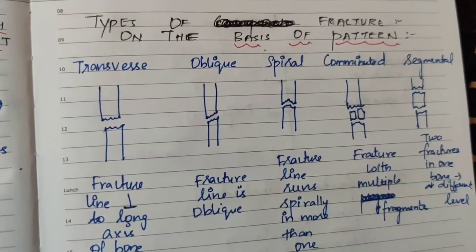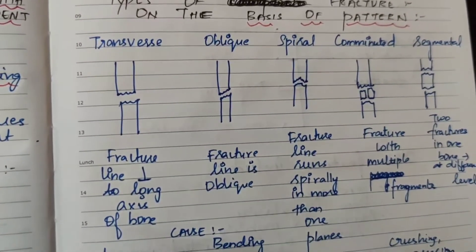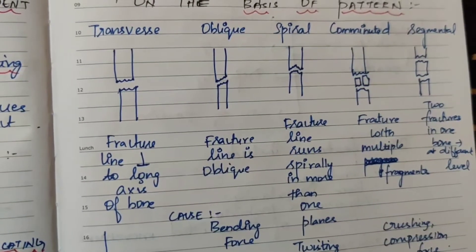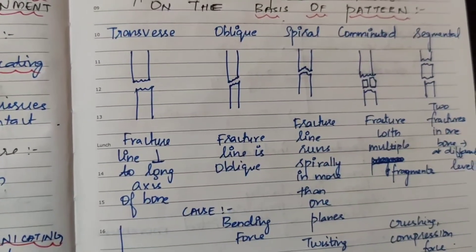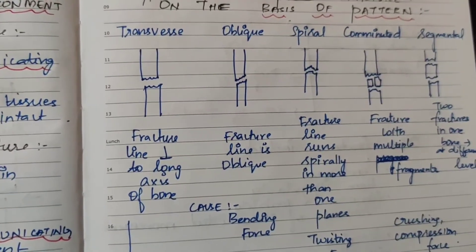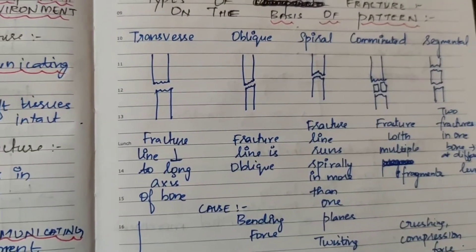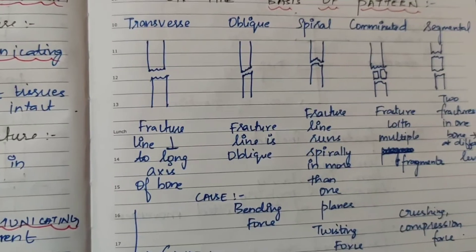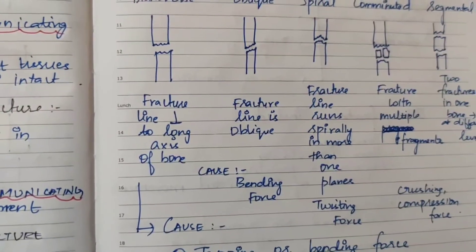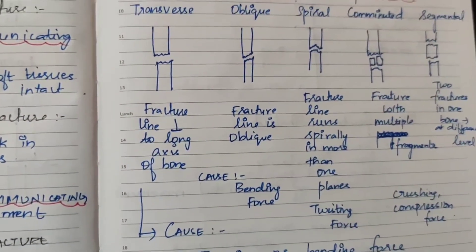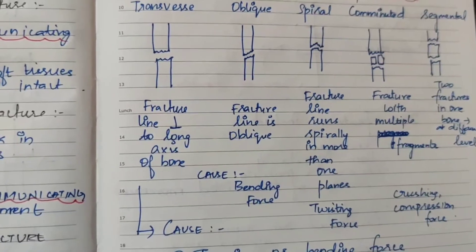Fourth classification: on the basis of pattern. First, transverse fracture — the fracture line is perpendicular to the long axis of the bone. Second, oblique fracture — the fracture line is oblique. Third, spiral fracture — the fracture line runs spirally in more than one plane around the long axis of the bone. Fourth, comminuted fracture — fracture with multiple fragments, more than two fracture lines. Fifth, segmental fracture — two fractures at different levels of the same bone.